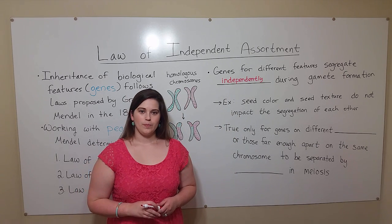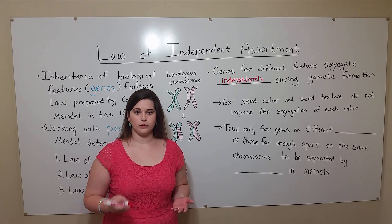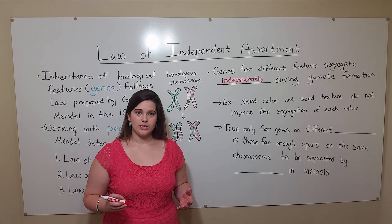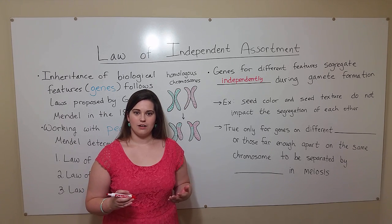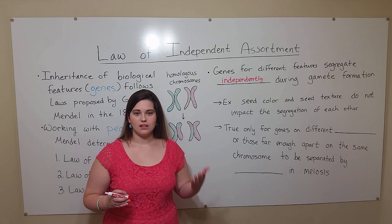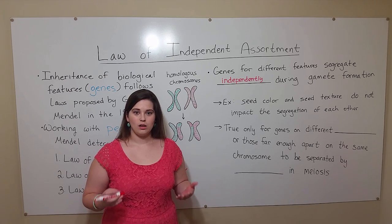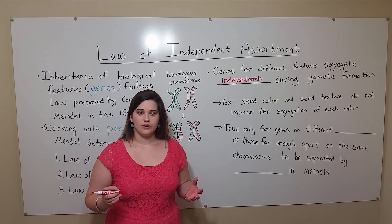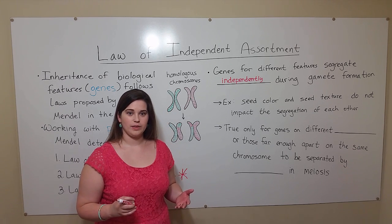So for example, when gametes are formed — this means egg cells or sperm cells in humans — traits that control different features separate into gametes independently of each other. So the inheritance of alleles for hair color, eye color, skin color, height, etc., all of these physical features don't affect each other, so they separate into gametes independently from each other.